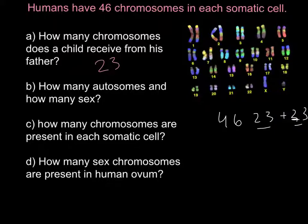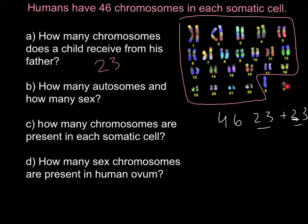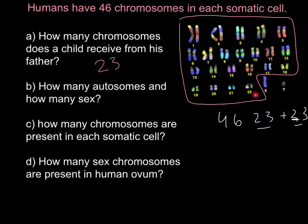Second question: how many autosomes and how many sex chromosomes? We divide the chromosomes into sex chromosomes — the two chromosomes highlighted here on the left. One is the X chromosome, which is much bigger than the Y chromosome, but they are still able to pair because they have homologous fragments present on each. These two chromosomes are able to pair during mitosis or meiosis, and they define the sex of the child. All the remaining chromosomes are called autosomes.